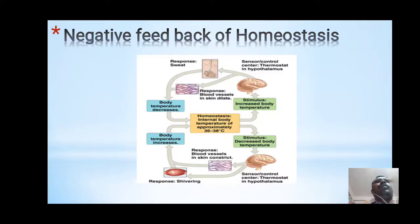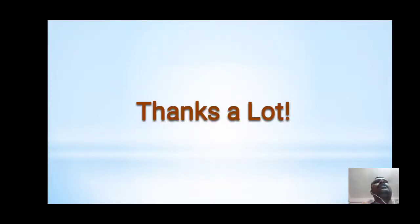In reverse, if the body temperature decreases, the stimulus is sent to the brain and the muscles. The blood vessels inside the skin constrict in response, and the muscles keep shivering in response. Consequently, the temperature of the body is reduced and homeostasis remains maintained. This is all regarding homeostasis and animal physiology. Thank you very much.